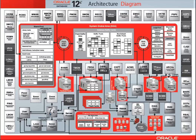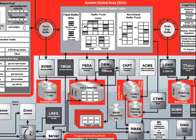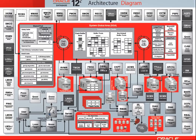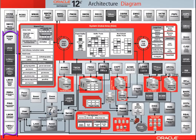Inside one square element, you may see two names. This indicates the second name, in smaller letters, is a slave of the first. For example, LG processes, new to 12c, are redo log writer slaves. The processes on the left, starting with RSMN and including RCBG, are all RAC-related processes.